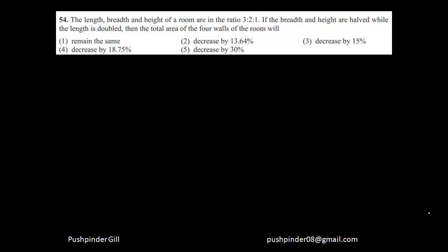So let's see this question. The length, breadth and height of a room are in the ratio 3:2:1. If breadth and height are halved or the length is doubled, the total area of the four walls of the room will become what?